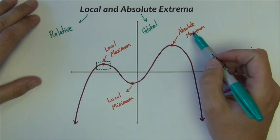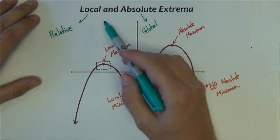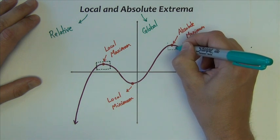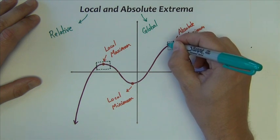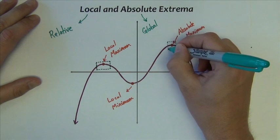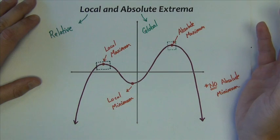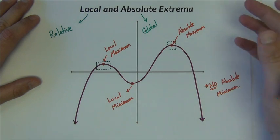Sometimes absolute or global maximums and minimums are just called local, because if I were to box this thing in the same way I did over on the left, well locally that's a maximum. Sometimes we just call all maximums local, and all minimums local, so just kind of be aware of that as well.